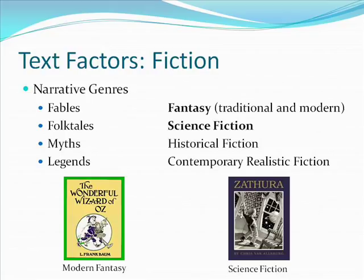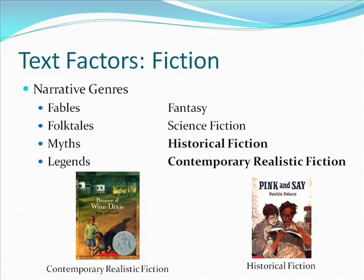Science fiction differs from fantasy not in subject matter but in aim, and its unique aim is to suggest real hypotheses about mankind's future or about the nature of the universe. Contemporary realistic fiction tells a story that never happened, but could have happened. Historical fiction can breathe life into what students may have considered irreverent and dull, allowing them to see their present as part of a living past — that people as real as themselves struggled with problems similar to their own.